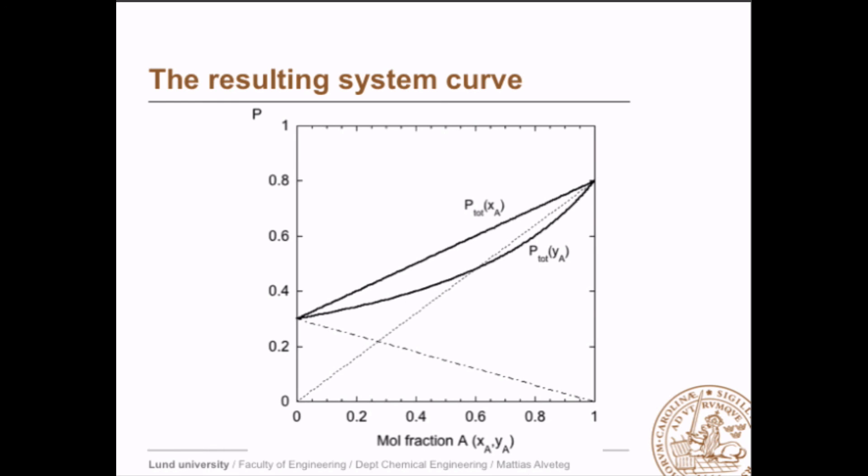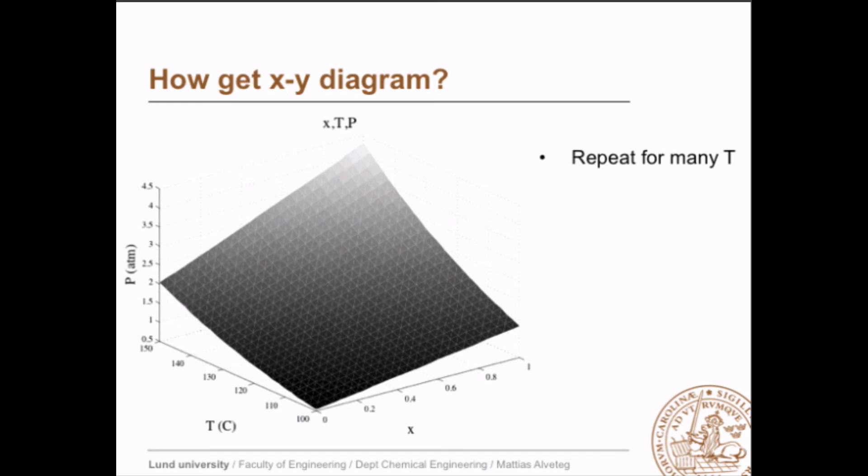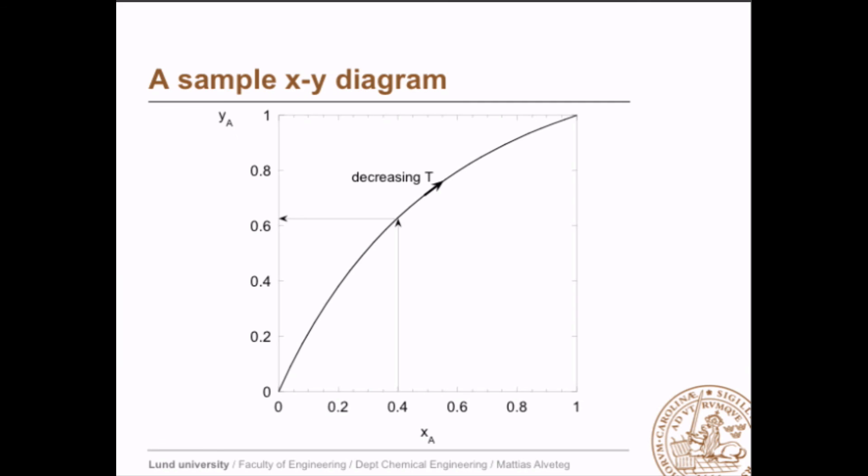The resulting system curve if we repeat that for many different x_A we get this curve here. You can repeat that for many different temperatures to get a three dimensional diagram. Then you can slice that graph in any way you want and get for example an xy system diagram for constant pressure. Note here that the temperature decreases as we go along the line here.